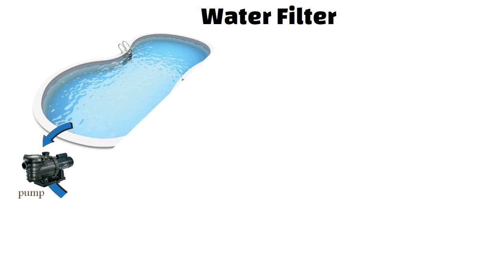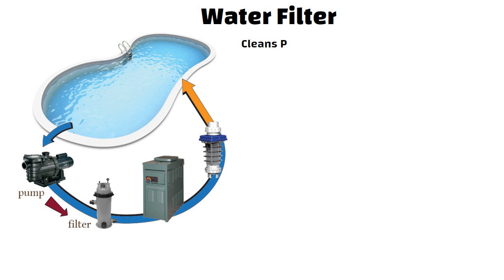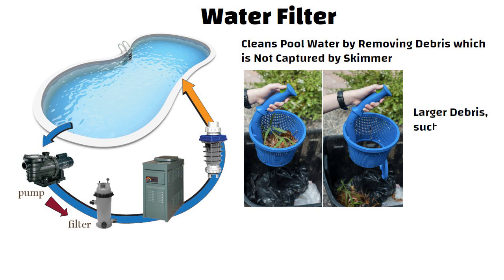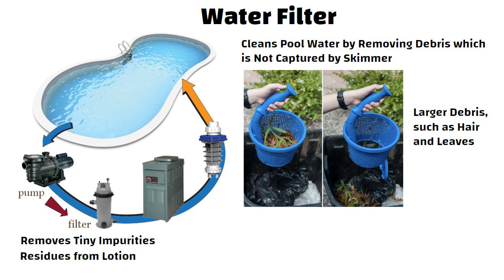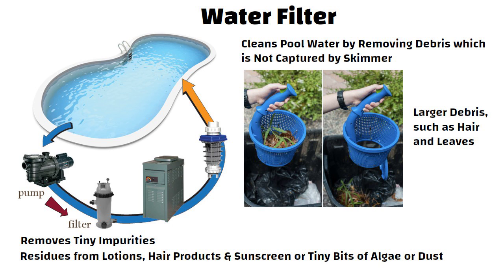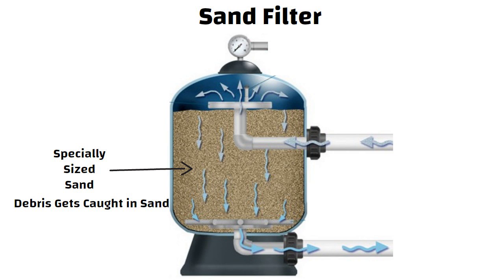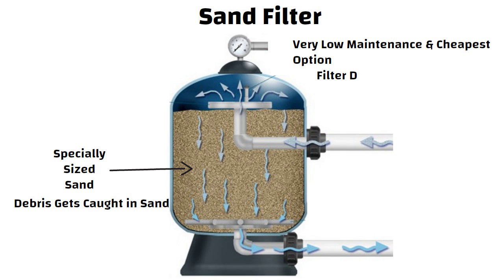Water filter. The water flows through the pump to the filter. The filter cleans your pool water by removing debris which is not captured by the skimmer. The skimmer removes larger debris such as hair and leaves, and the filter removes tiny impurities. These could be residues from lotions, hair products, and sunscreen, or tiny bits of algae or dust. There are three main types of filters generally used in swimming pools: sand, DE, and cartridge. Sand filter. Sand filters work by running water through specially sized sand. The debris gets caught in the sand as the water passes through. They are very low maintenance and the cheapest option. However, they only filter down to 20 microns.